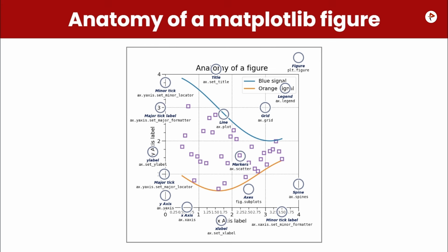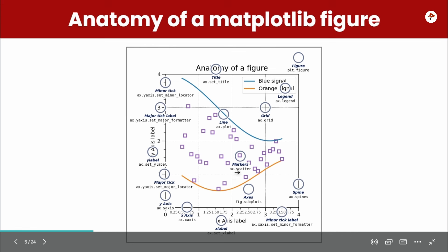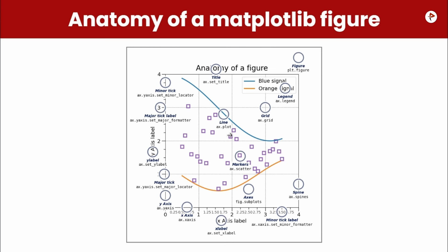Let's understand the anatomy of a matplotlib figure. We will be seeing about line plot, bar plot, histograms, scatter plot and many types. In a matplotlib figure you can set the title, minor tick, major tick, label, y label, x label, x axis values, y axis values, markers, the type of line, and you can also place a grid and a legend which indicates what each color represents. This is the general anatomy of a matplotlib figure.